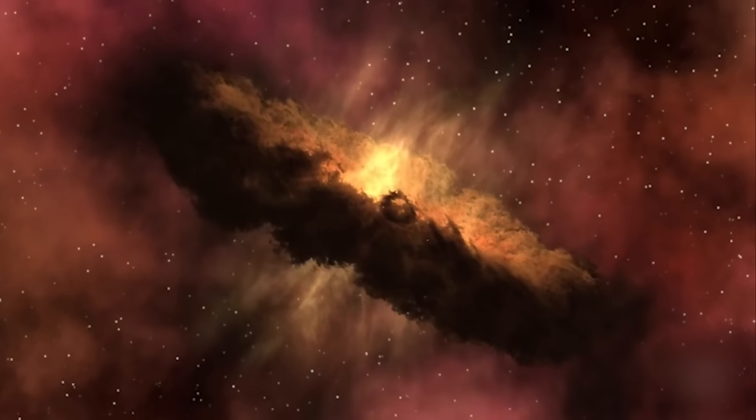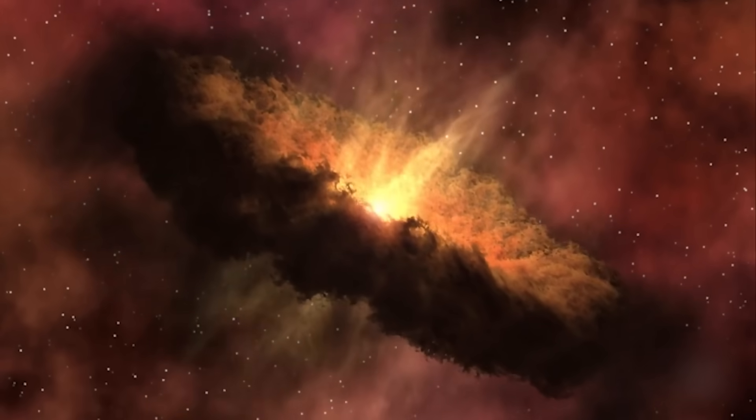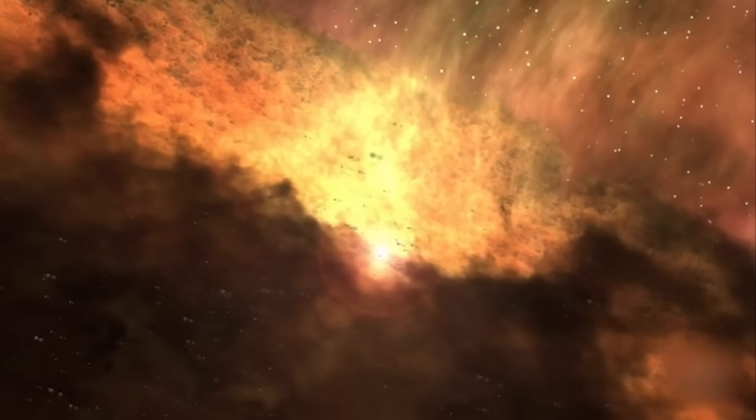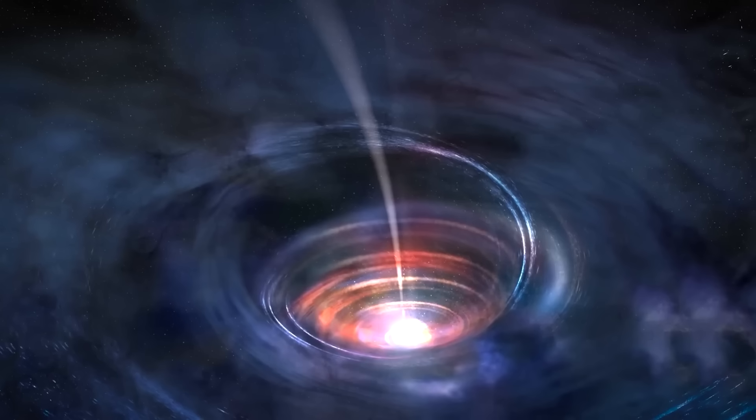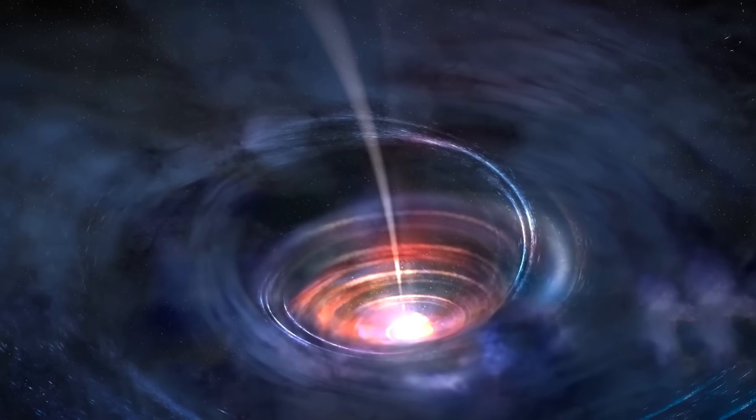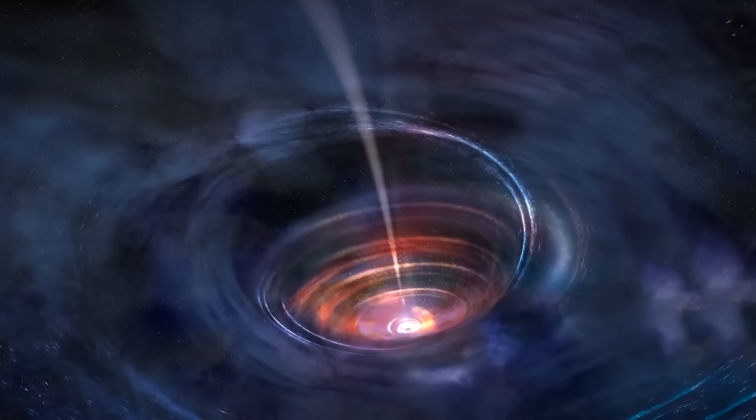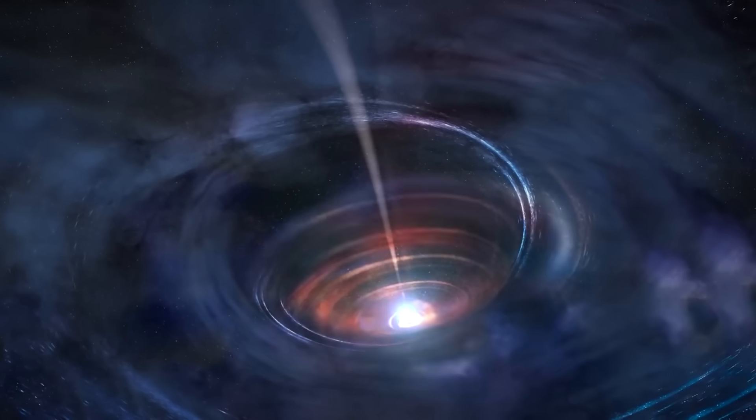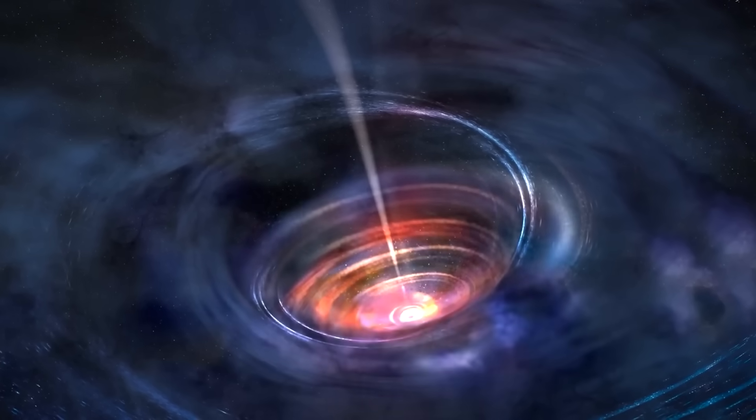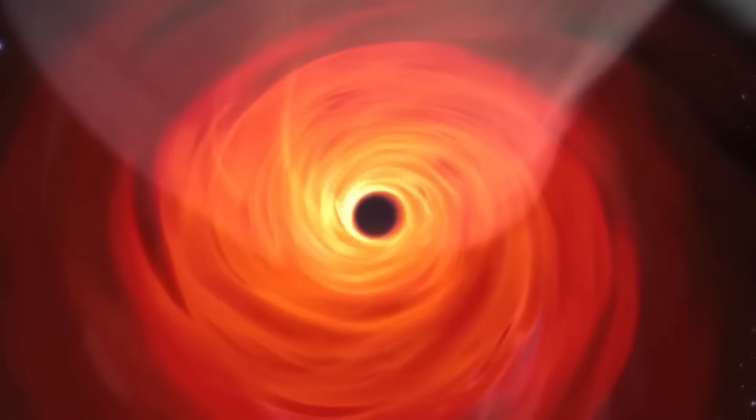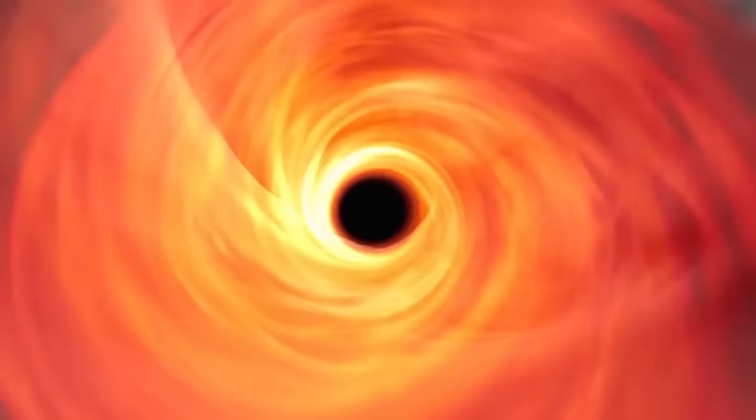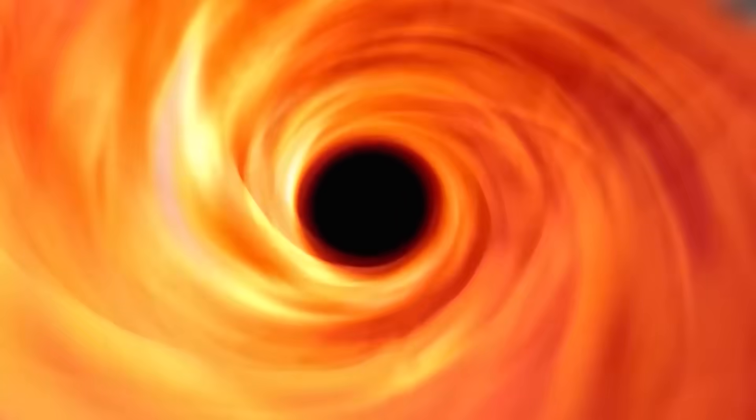The theory suggests that as galaxies form, they accumulate gas and dust that eventually collapses under gravity to form stars. However, the growth of the galaxy and its central supermassive black hole are interdependent, meaning the black hole's growth can also influence the growth of the galaxy. Supermassive black holes can limit the growth of galaxies by expelling and heating up gas that would otherwise form new stars.